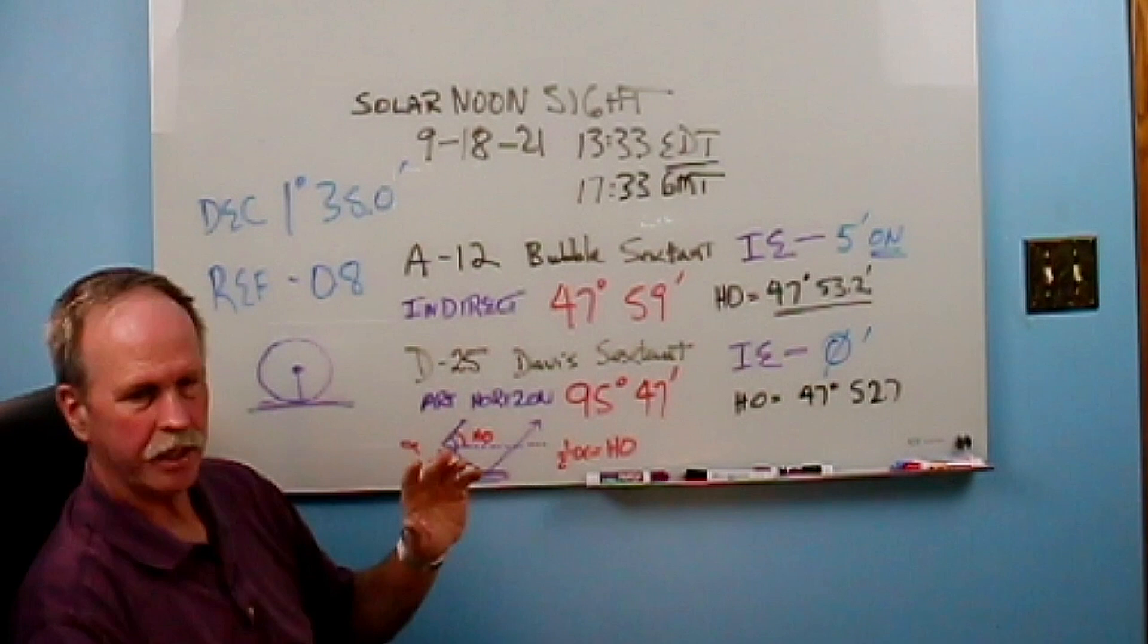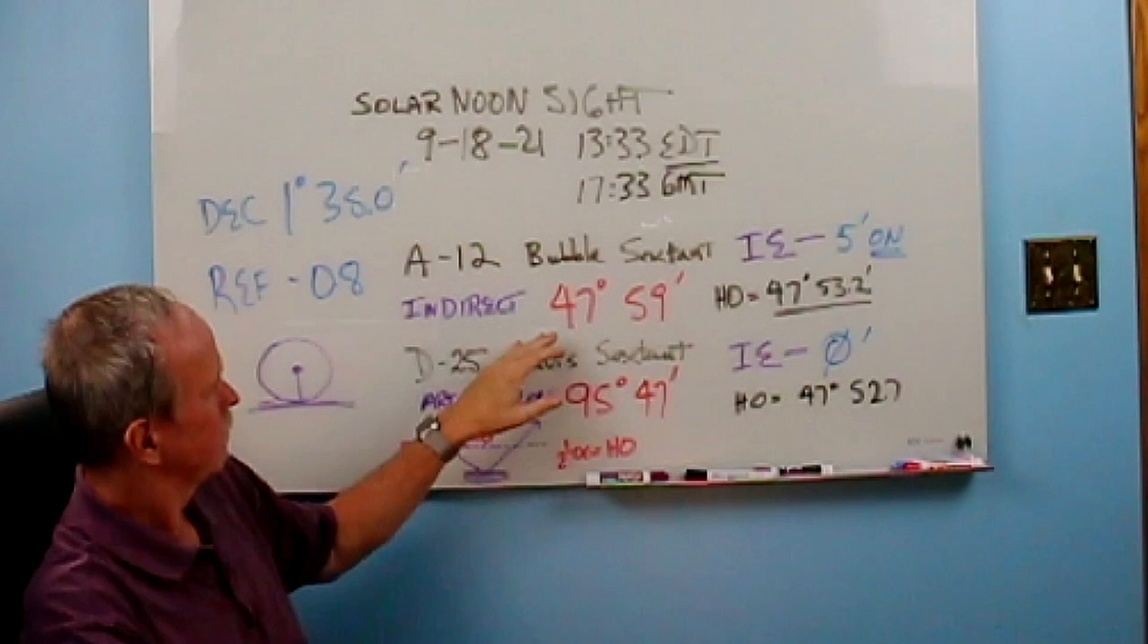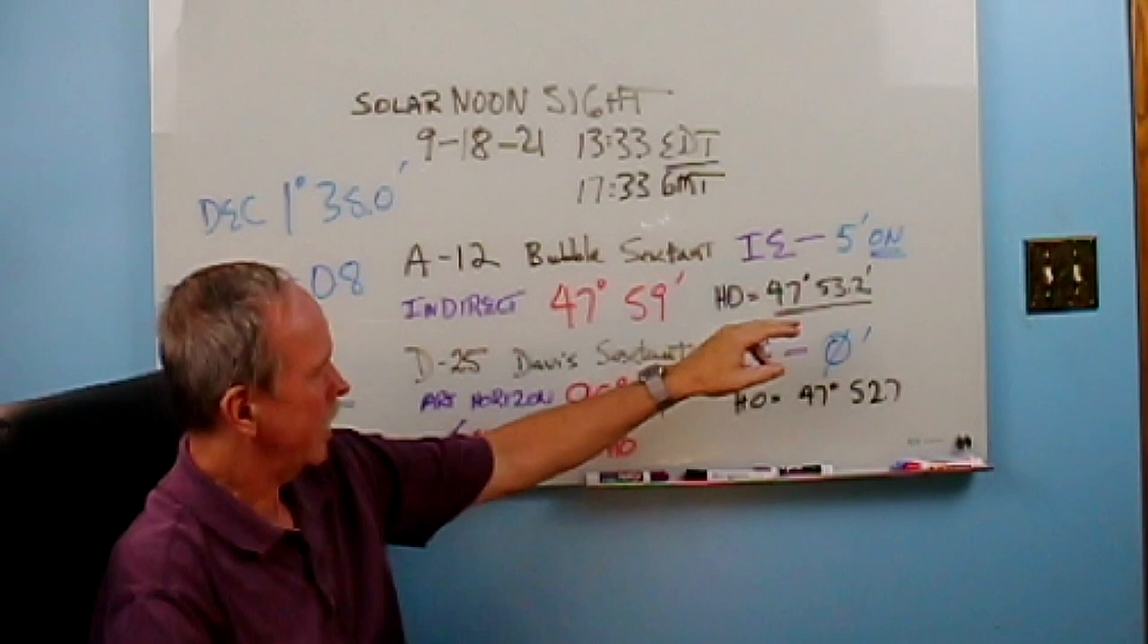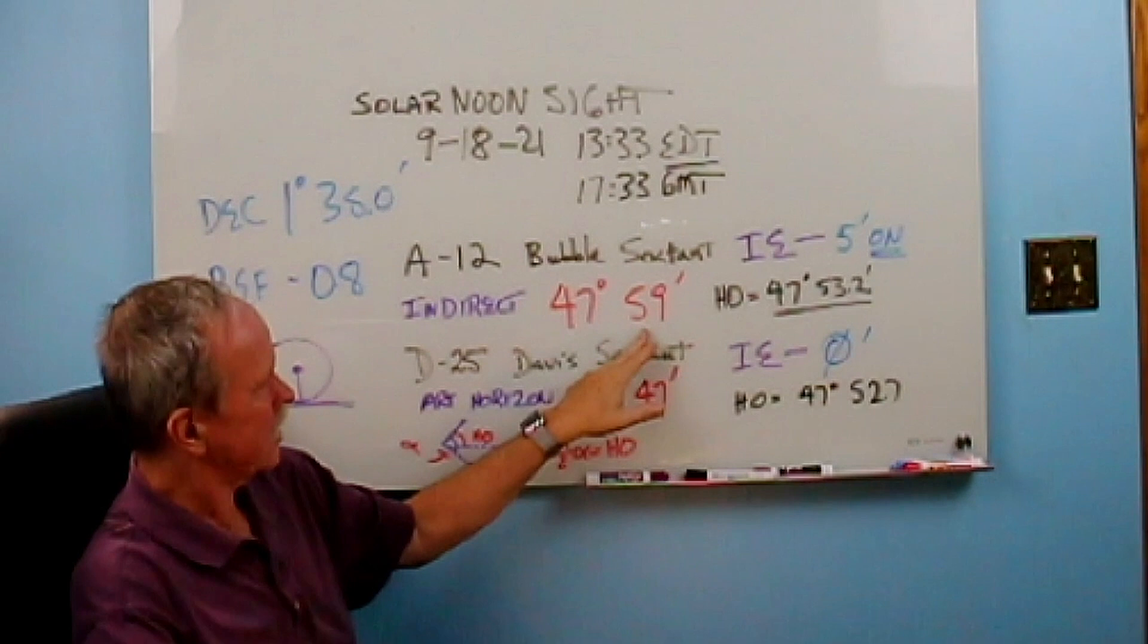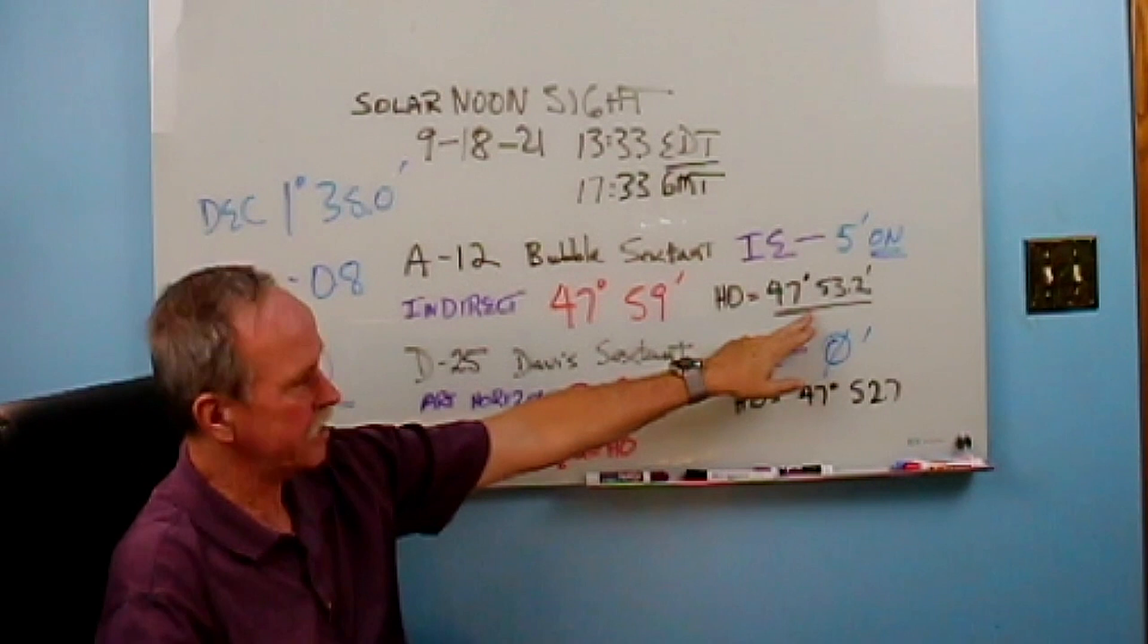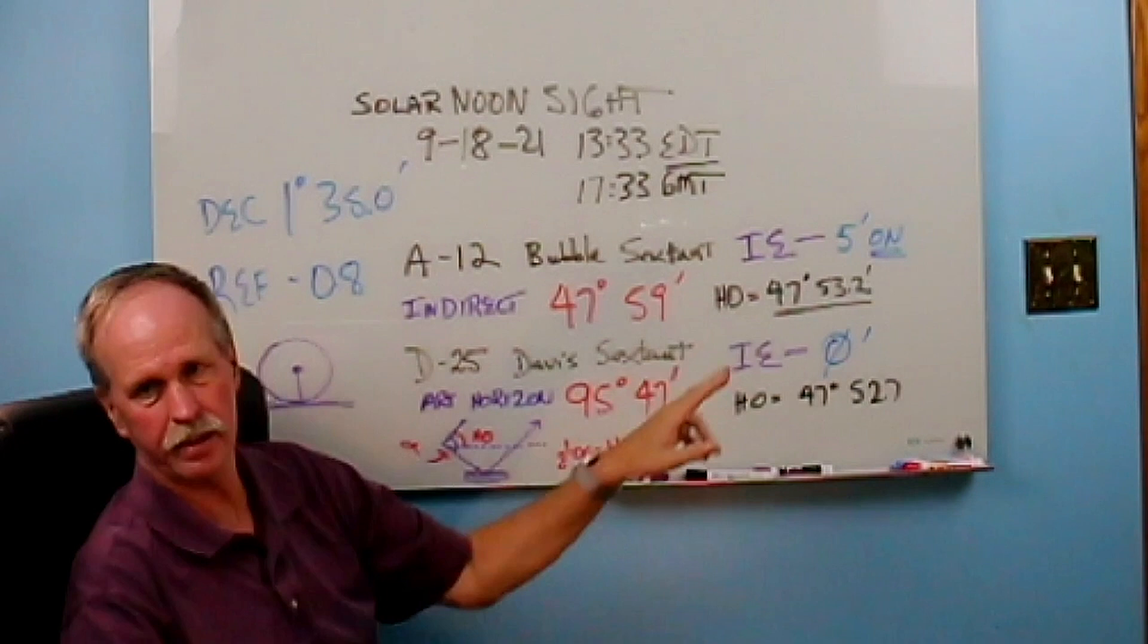Let's start off with the easy one. We'll start with the indirect reading from the A12 bubble sextant. This is our raw reading. This is HS. 47 degrees, 59 minutes. From that, we have to subtract our index error of 5 minutes. That brings us down to 47 degrees, 54 minutes. Then we need to subtract our refraction. And that brings us to 47 degrees, 53.2 minutes. And that is our final corrected reading.